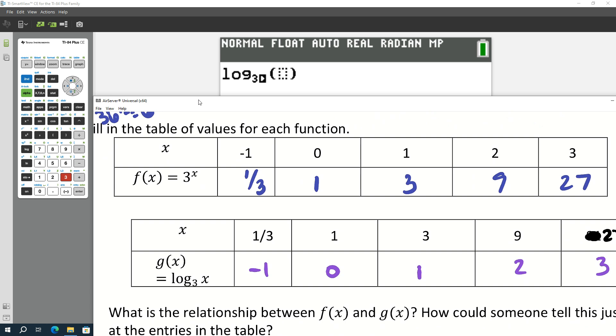All right. So what do you guys notice about the tables? They switch, right? So the x, not really opposites, but the x and y switch. When I think of opposite, I think of opposite signs. But in this case, the x and the y switch. What other types of functions do the x, or what types of functions do the x and y switch? Special functions.